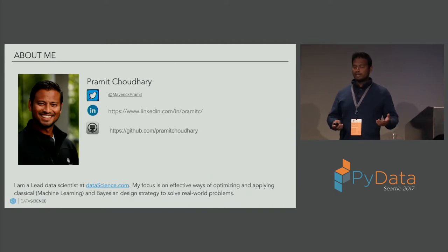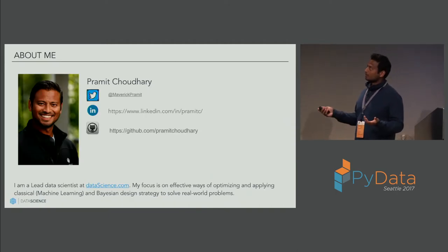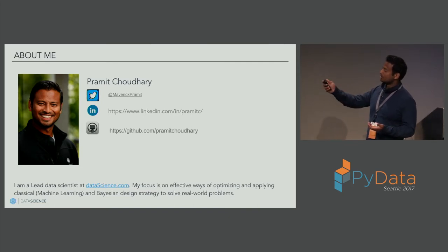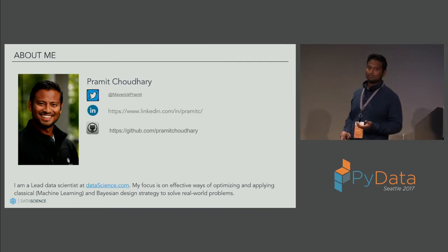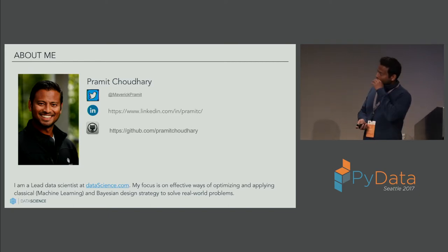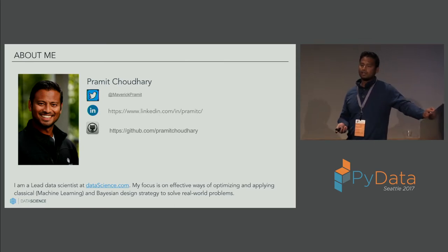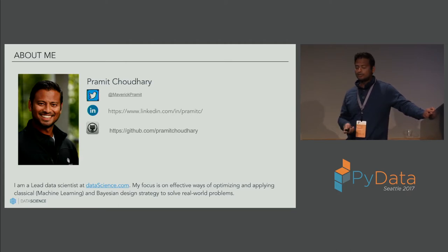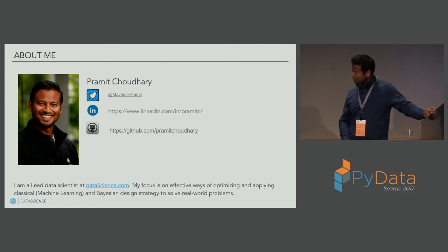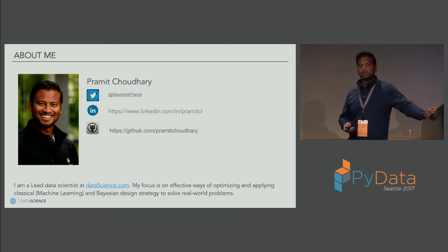Before we get into the details, just to briefly introduce myself — my name is Pramit Chaudhary. These are the social media handles you can reach out to me. I'm a lead data scientist at datascience.com. Most recently I've been focusing on effective ways of optimizing and evaluating machine learning algorithms. Model interpretation is another example of it. The whole idea is how can we make machine learning get applied to solve real world problems in a more effective manner.